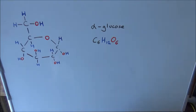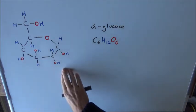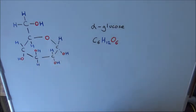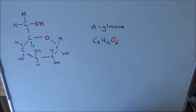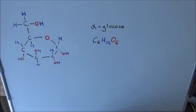Glucose is a simple sugar, a monosaccharide, in that it consists of one sugar unit. It's the main sugar in the blood, where its concentration is about 5 × 10⁻³ mol dm⁻³, or about 9 milligrams of glucose in every cubic centimetre of blood. Cells such as muscle cells and liver cells can take this glucose directly from the blood and use it as an immediate source of energy, or they can convert it to glycogen, which is a storage polysaccharide, and use it later.